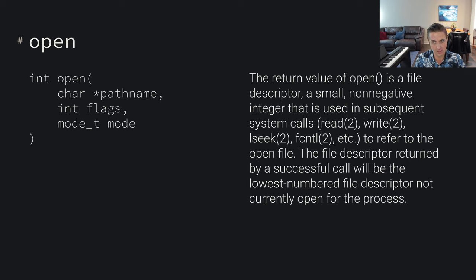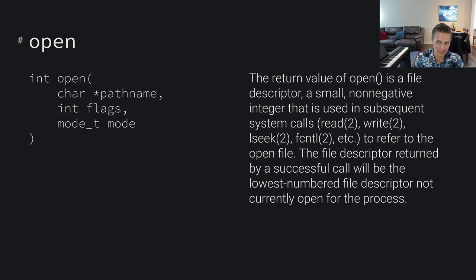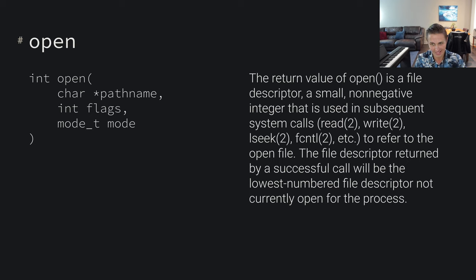An important thing to realize about the open syscall in particular is that the return value of open is a file descriptor. The read and write system calls operate on these file descriptor things - they're small non-negative integers used by subsequent system calls, for example read, write, lseek, fcntl, et cetera, to refer to the open file. The file descriptor returned by a successful call will be the lowest numbered file descriptor not currently open for the process.